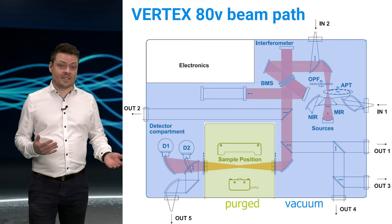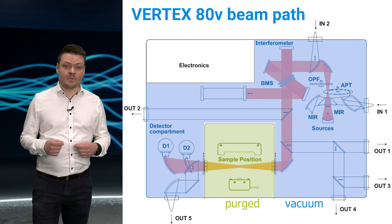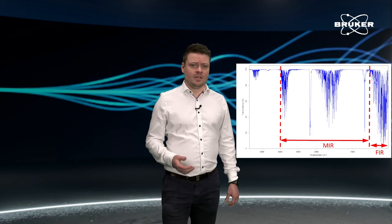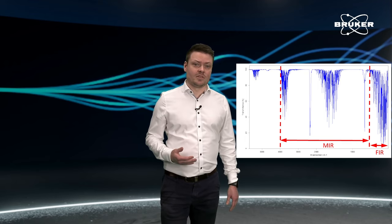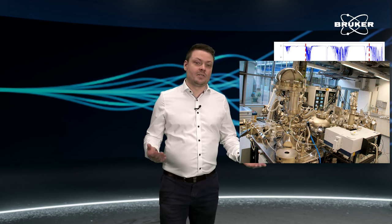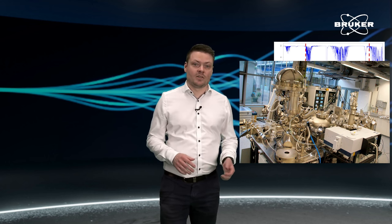Aggregation studies can also last very long, and there the very stable background conditions of a vacuum system come into play. When you're working in the far infrared or even the terahertz region, you're dealing with small signals and strong water absorption. Here, a vacuum system can offer significant improvements. Also, if you want to connect your FTIR spectrometer to an ultra-high vacuum system, it makes a lot more sense to also have your FTIR spectrometer under vacuum conditions.